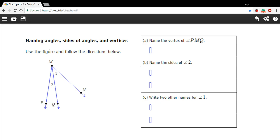This angle here could be QMN or NMQ. So when we look at A and it says name the vertex of angle PMQ, well, we just look for the letter in the middle. That is our vertex. So that is point M.